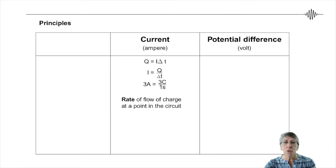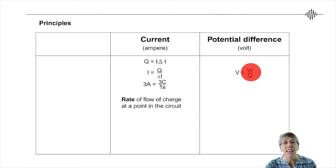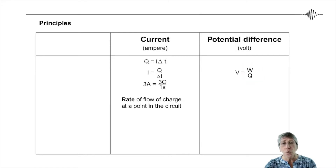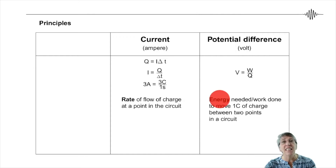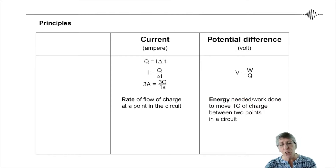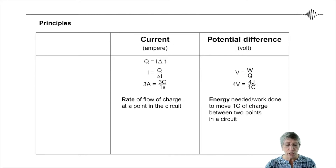When we look at potential difference, you have V equals W over Q. W here is for energy, and Q is for charge. So this will be the energy required to move one Coulomb of charge, and that is between two points. So if you have a voltmeter reading of four volts, then that voltmeter is telling you that four joules of energy is required to move one Coulomb of charge between those two points.